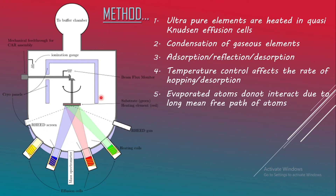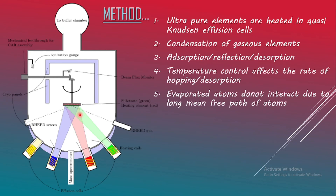The evaporated atoms do not interact with each other or with any chamber gases until they reach the wafer, due to the long mean free path of the atoms. Gallium and arsenic atoms travel separately without interacting until they reach the substrate. This is why we call it 'beam' - there are directed beams of atoms traveling to the substrate, explaining the term 'molecular beam' in MBE.